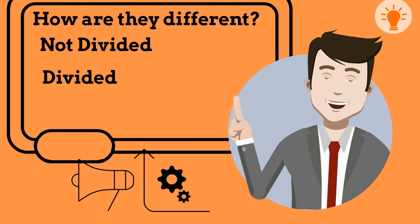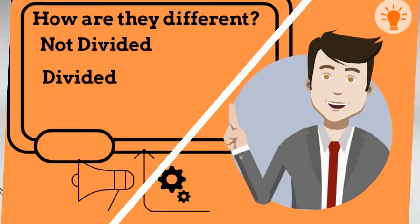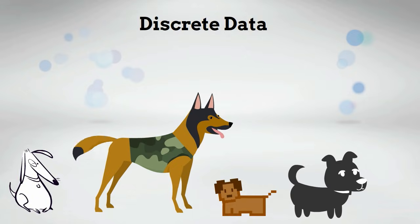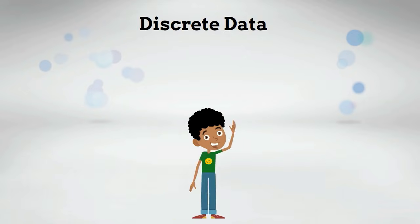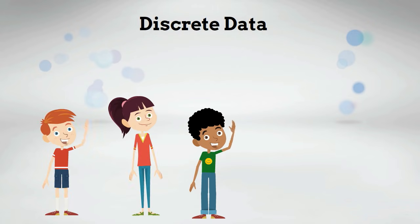Let's look at a couple of examples to see the differences. Examples of discrete data would include the number of dogs, number of students, or the amount of money.